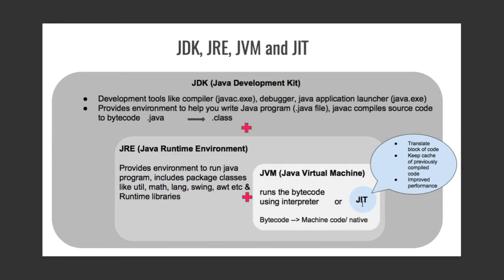JIT stands for Just-In-Time compiler. JIT is an integral part of JVM and it is activated by default when a Java method is called. The Just-In-Time compiler compiles bytecode into machine code. JVM's default behavior is to execute bytecode using the Just-In-Time compiler, but if it is disabled or its environment variables are not set, JVM uses the interpreter instead.